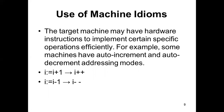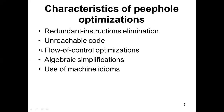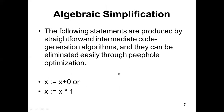In summary, peephole optimization identifies a shorter sequence of instructions — the peephole window — which is replaced by a shorter and faster sequence for improved execution time. The contents of the peephole window need not be contiguous. The different characteristics are: redundant instruction elimination, unreachable code elimination, flow of control optimizations, algebraic simplification, and use of machine idioms. Thank you.